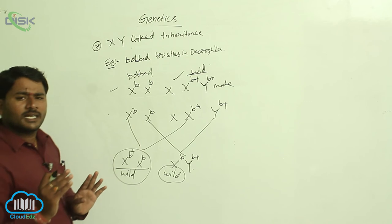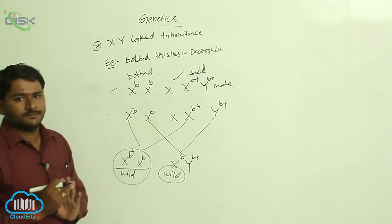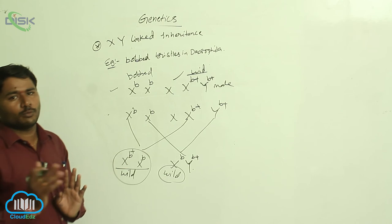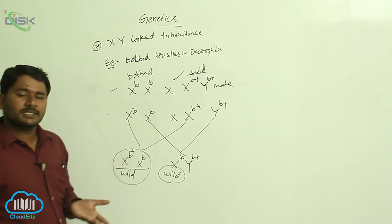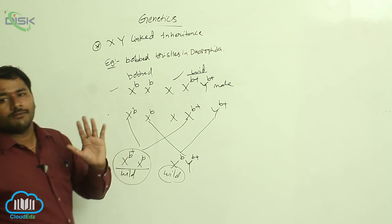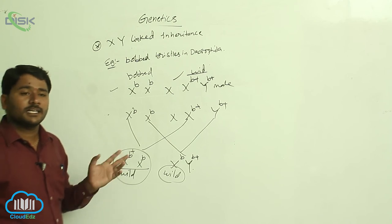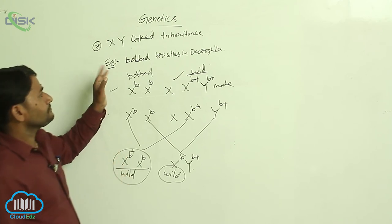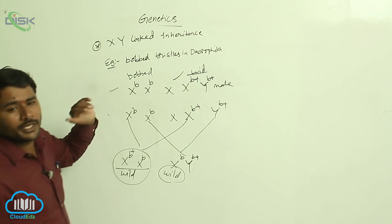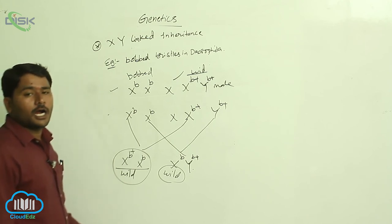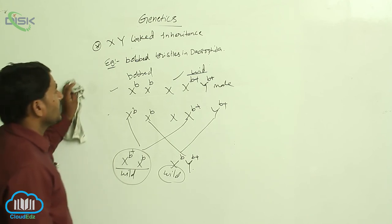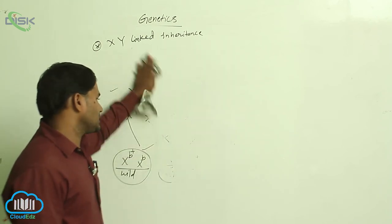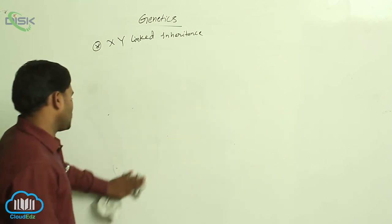X-Y-linked inheritance is common for both male and female because the genes are present on both chromosomes — on the X as well as on the Y. When they are present on both chromosomes, they generally show transmission like autosomes. These are X-Y-linked characters and their inheritance process.